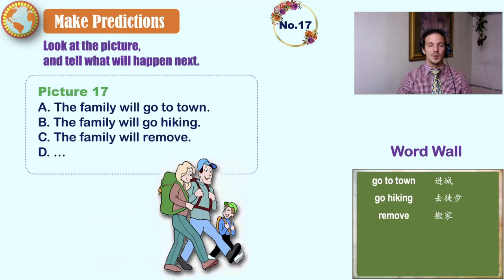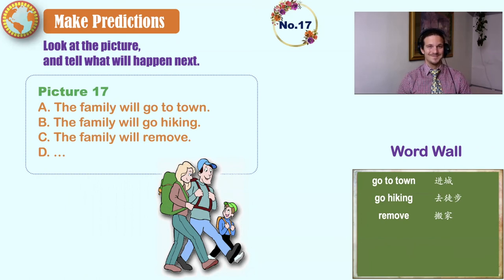Seventeen. Go to town, go hiking, remove. The family will go to town. The family will go hiking. The family will remove. The family will go to sleep. What will happen next?